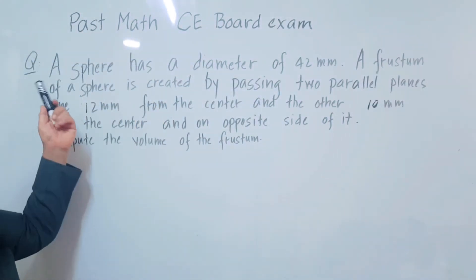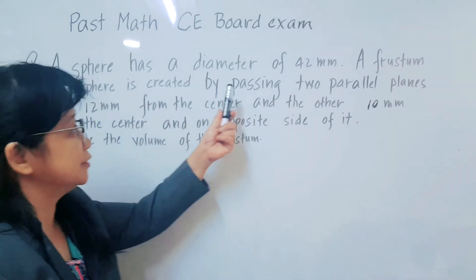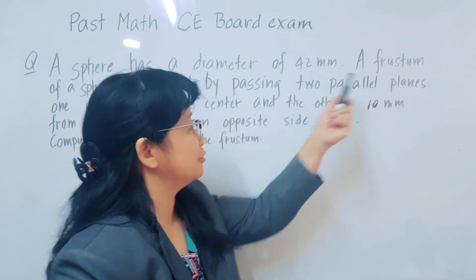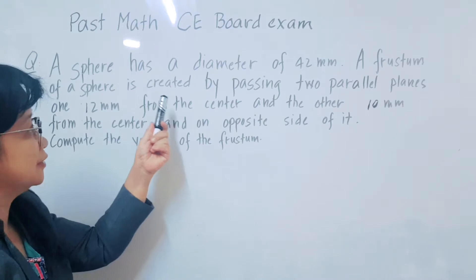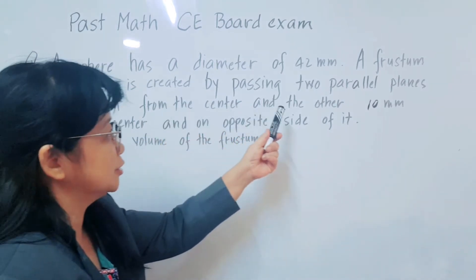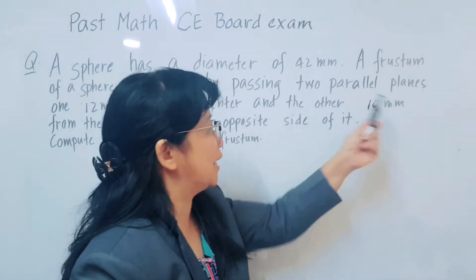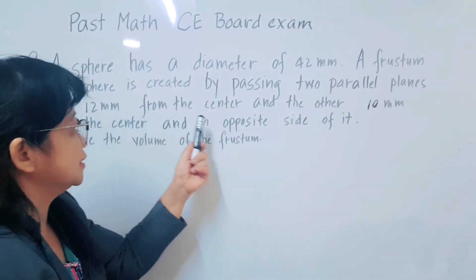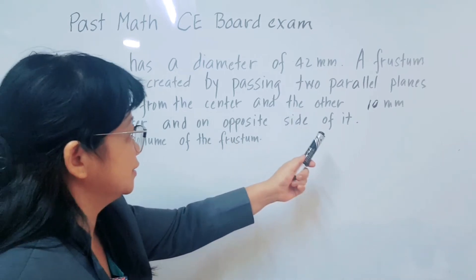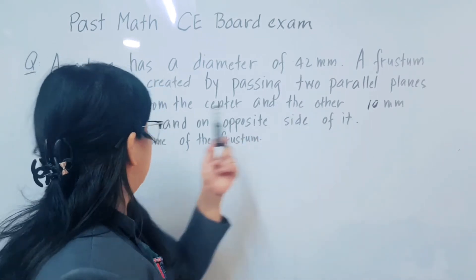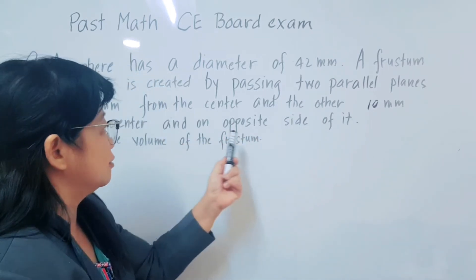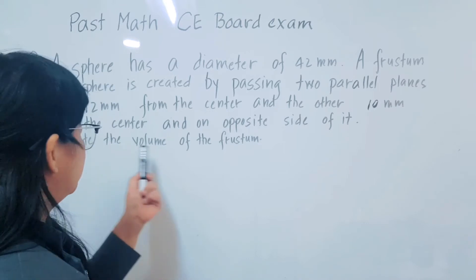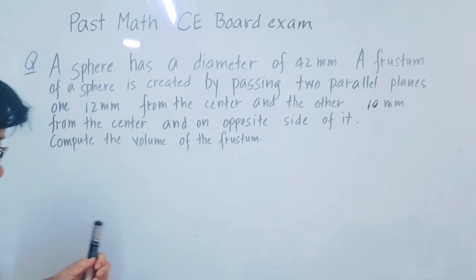The question: the diameter of the sphere is 42. There are two planes cutting the sphere — one at one side and the other at 3 units — one is the near side and the other is the far side. Compute the volume of the frustum.